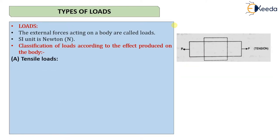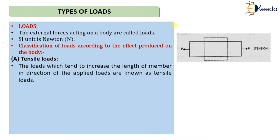The first classification of loads is according to the effect produced on the body. The first type is tensile load. Loads which tend to increase the length of a member in the direction of the applied load are known as tensile loads. As shown in the diagram, the load stretches the body in both directions, increasing its length in the same direction as the applied load.